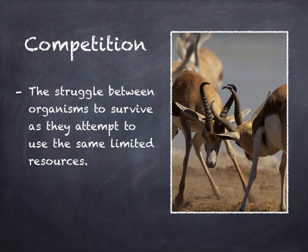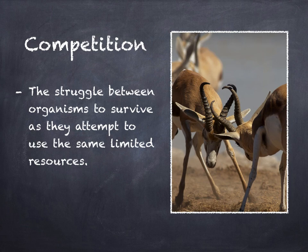Competition: If two species occupy the same niche, one of the species might eventually die off. The reason for this is competition. The struggle between organisms to survive as they attempt to use the same limited resource is called competition. For example, weeds in a garden compete with vegetable crops for soil, nutrients, water, and sunlight. In any ecosystem, there are limited amounts of food, water, and shelter. Organisms that share the same habitat often have adaptations that enable them to reduce competition.